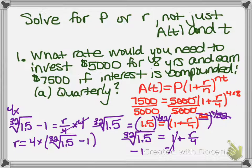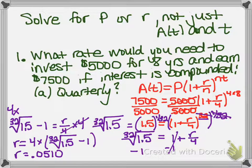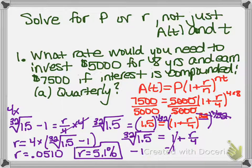So our answer for r is 4 times the quantity (32nd root of 1.5, minus 1). That 4 multiplies the entire expression. If you type this into a calculator, you get 0.0510, which tells you your interest rate would be 5.1%. Remember that when r is plugged into an equation it's a decimal, so to answer this problem we convert back to a percentage.